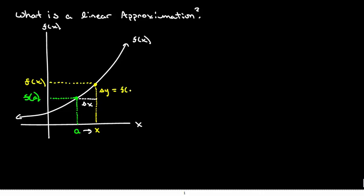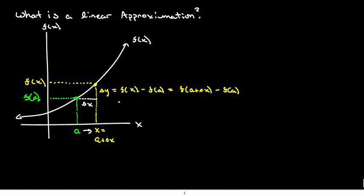Delta y is clearly equal to f at x minus f at a. Another way of looking at that: x equals a plus delta x, so x minus a is delta x. That's how we define our change in y. Now to find delta y, we may ask what is the change in the y variable — but we might not actually be able to compute it, or it might be somewhat difficult to find.